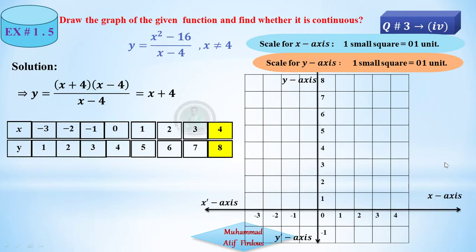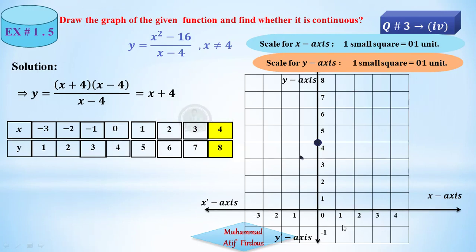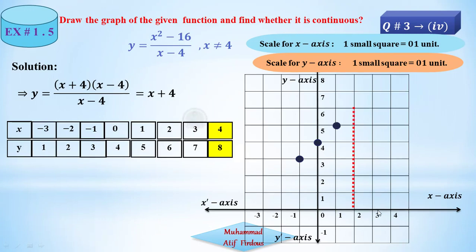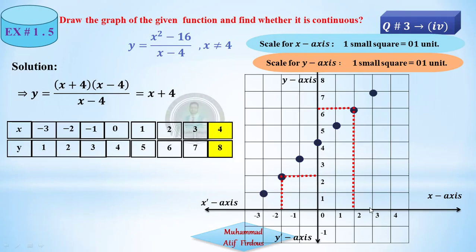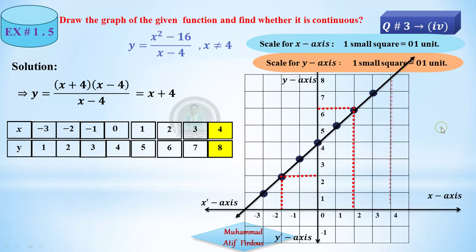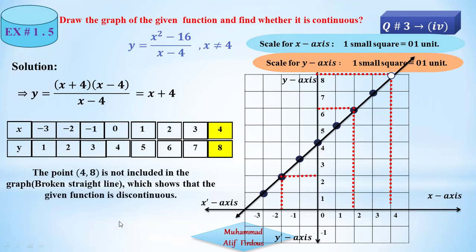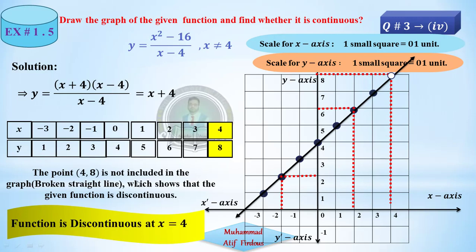Scale on x-axis and y-axis: one unit each. Points: x equals 0, y equals 4; x equals minus 1, y equals 3; x equals 1, y equals 5; x equals 2, y equals 6; x equals 3, y equals 7; x equals minus 2, y equals 2; x equals minus 3, y equals 1. Connect all points. At x equals 4, y equals 8 — this point is excluded, so draw an open circle. The line breaks at four and eight, so it is a discontinuous function. The discontinuous point is at x equals 4, as the function itself stated that this value is not to be taken.